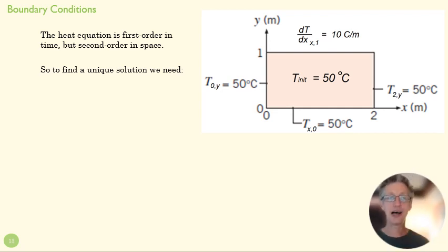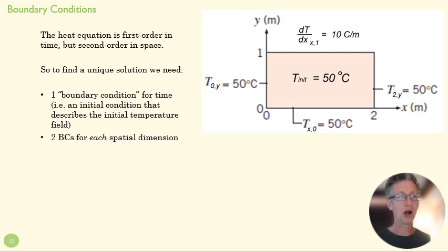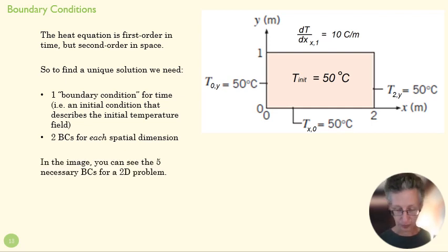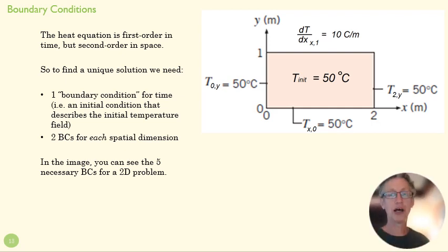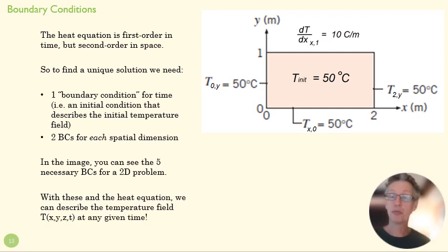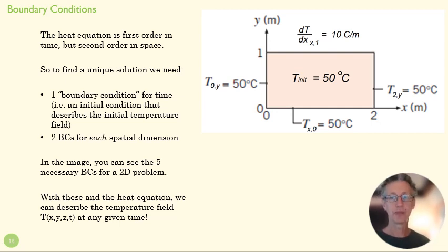The heat equation is first order in time but second order in space. A first-order equation needs one BC; a second-order needs two. So for a unique solution of any D-dimensional problem, we need one boundary condition for time and two boundary conditions for each spatial dimension. For the 2D problem shown here, we have three temperature boundaries, one flux boundary, and one initial condition at time equals zero — that's five boundary conditions for our 2D problem. A 3D problem would need seven.